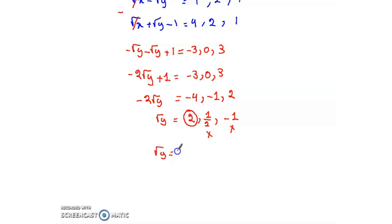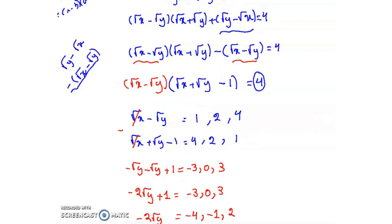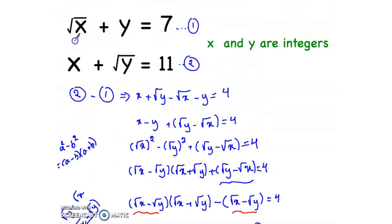So radical y equals 2, then y equals 4. And now we need to find x. Let's look to our original equation, radical x plus y equals 7, and substitute y here.